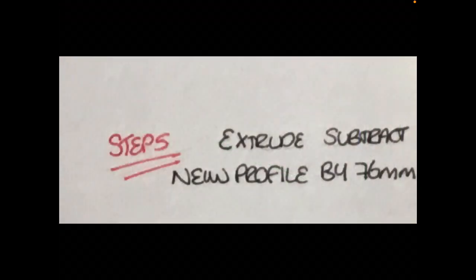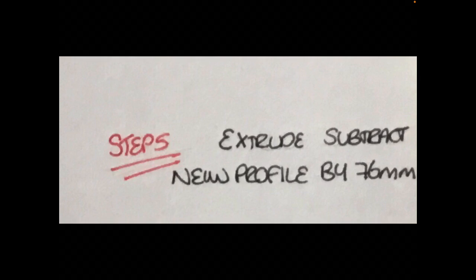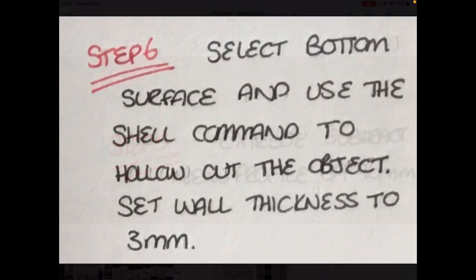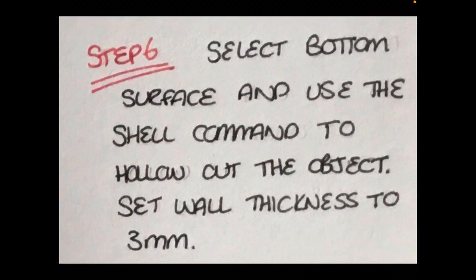Once we've created the profile for the removed section on the cone we want to go to the next step. So at step five you want to simply select extrude, make sure you change it to say extrude subtract and select your new profile and extrude subtract by 76 millimeters. This should then give you the cone shape with the angled profile removed.